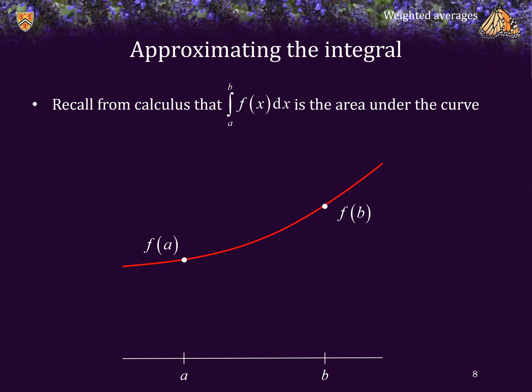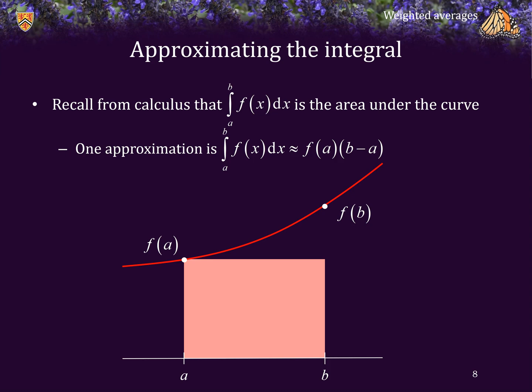Now recall from your calculus that the integral of f going from a to b is simply the area under this curve between those endpoints. One approximation of this integral is simply f at a times the width of the interval b minus a. While this may be a poor approximation in general, it's used in Riemann sums, but it's actually okay if f is at least approximately constant along the interval from a to b.